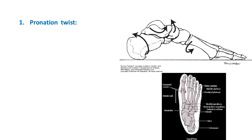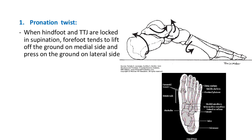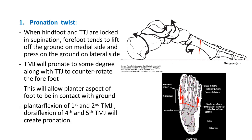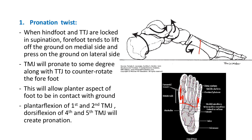Opposite to supination twist is pronation twist. In pronation twist, the hind foot is locked in supination, causing the medial forefoot to lift off the ground while the lateral forefoot is compressed on the ground. To counter this, the tarsometatarsal joint goes into pronation twist so the medial aspect of the foot also touches the ground. For pronation twist, the first and second tarsometatarsal joints go into plantar flexion and the fourth and fifth go into dorsiflexion.